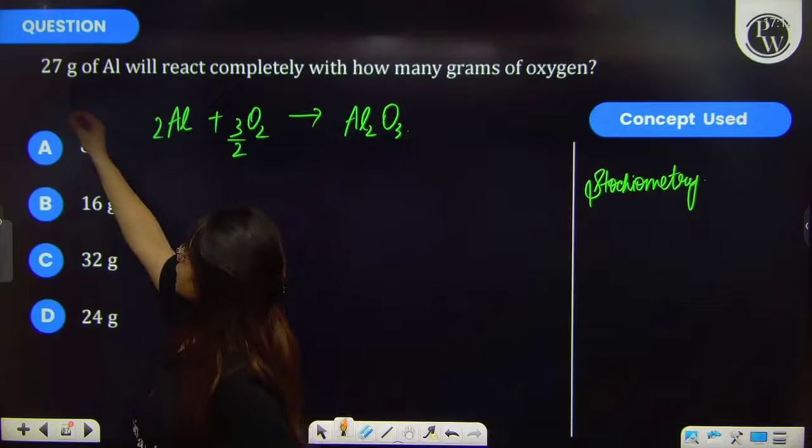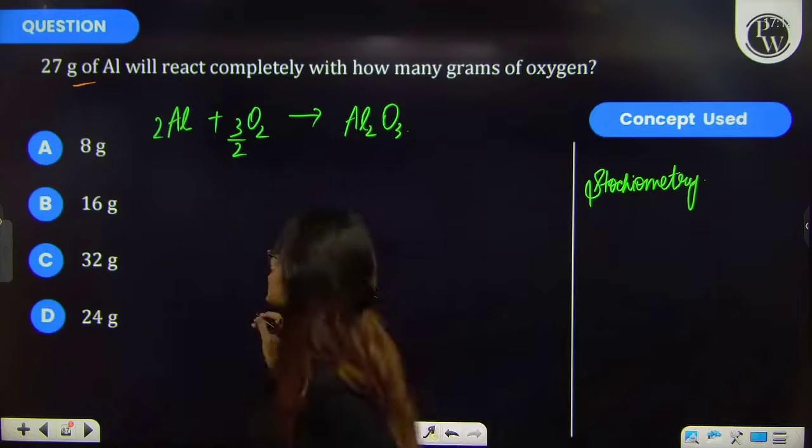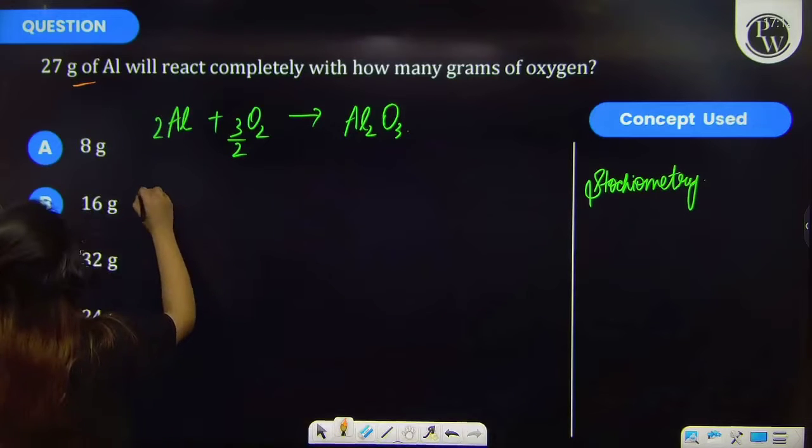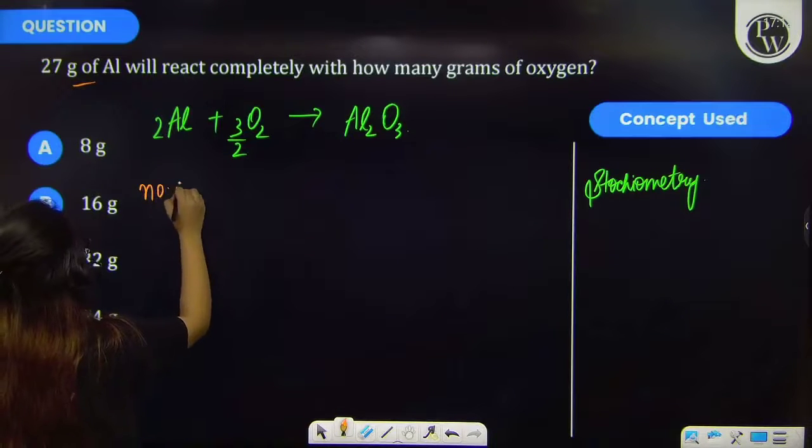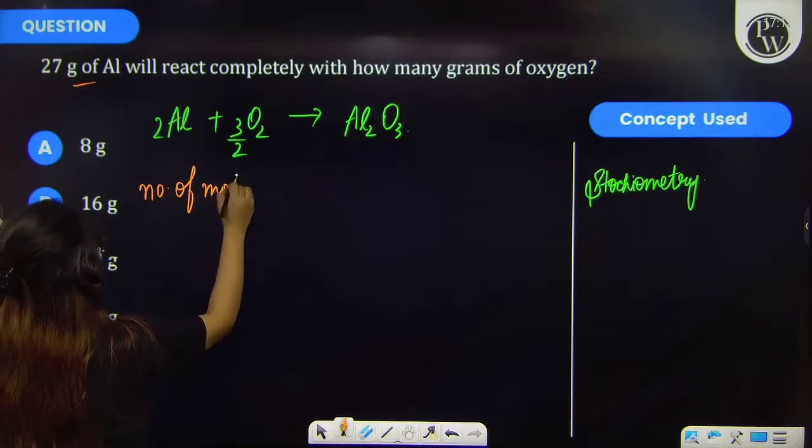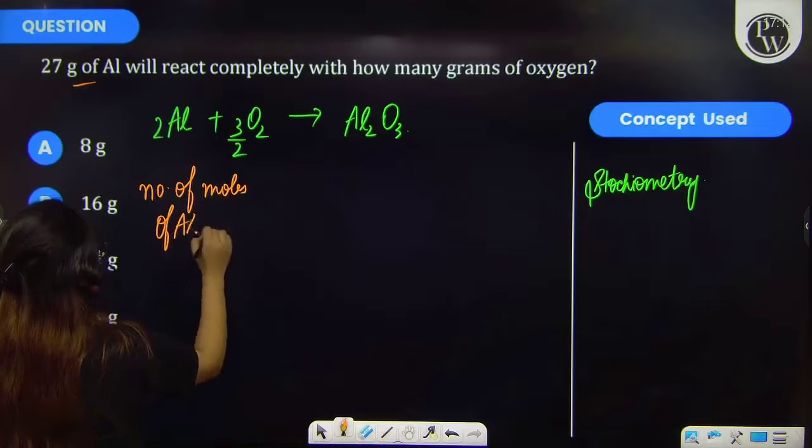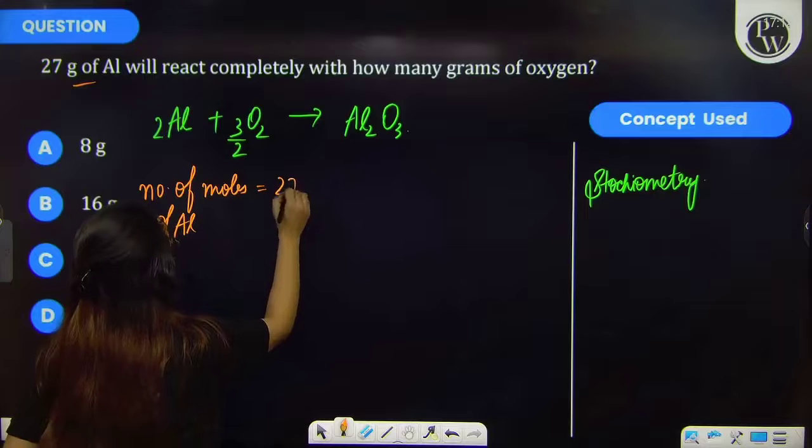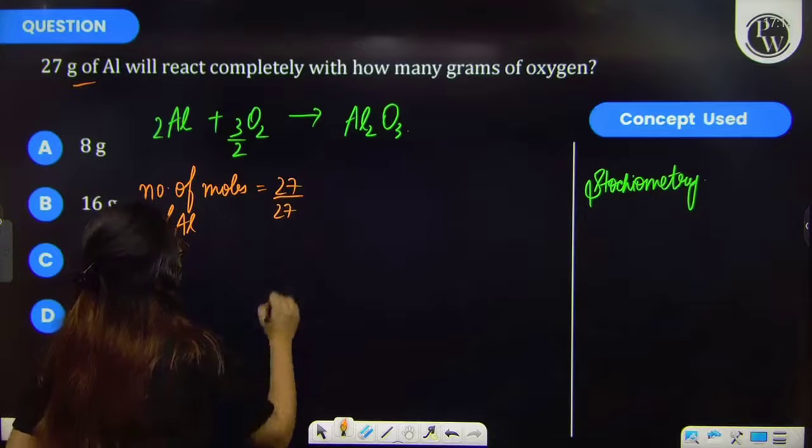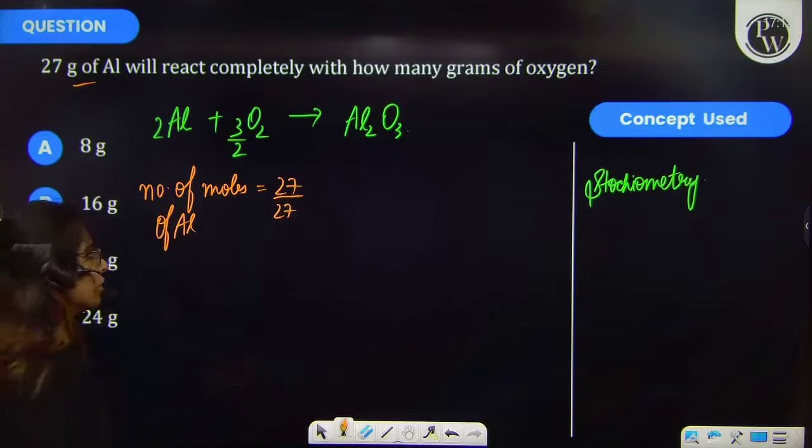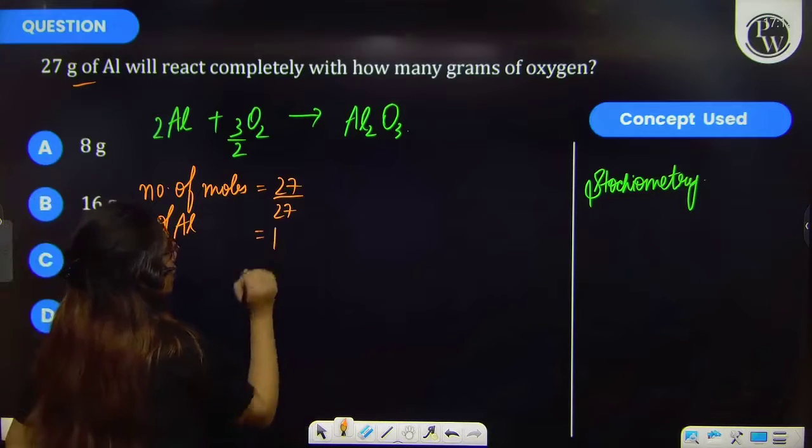They have been given 27 grams of aluminium. So firstly we have to find number of moles of aluminium. And it will be 27 upon 27 because the molar mass of aluminium is 27 grams per mole. So it will be 1 mole.